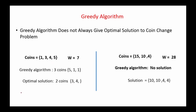As another example, with coins 15, 10, and 4 and amount 28, using a greedy strategy we first pick 15, then 10. The sum is 25 and we cannot complete the solution — so there is no solution found by greedy. However, there is a valid solution: pick 10, 10, 4, and 4.